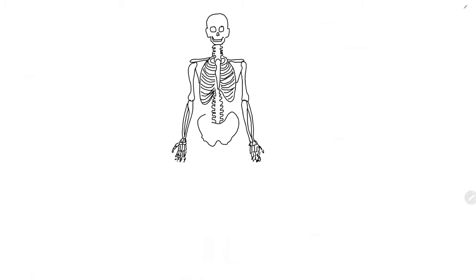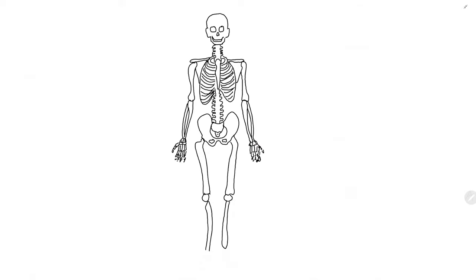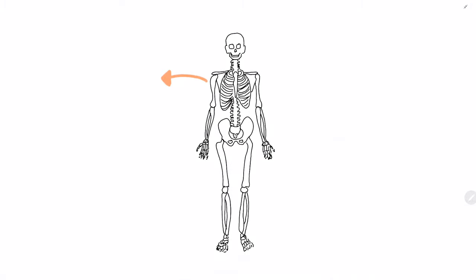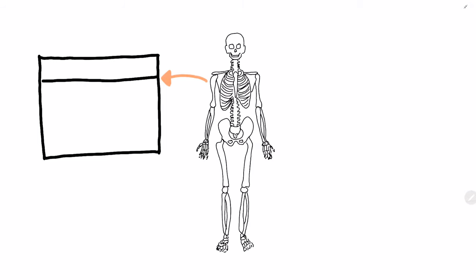The skeletal system has bones of different shape and length, and we can easily classify them. First, let us take a look at long bones. Here in the drawing you can see that the bones of the upper and lower limbs are examples of long bones. A long bone is cylindrical and is characterized by the presence of a medullary cavity.